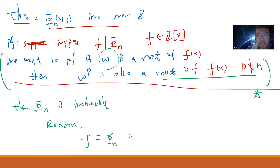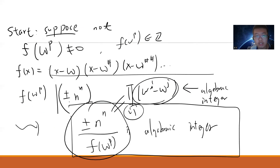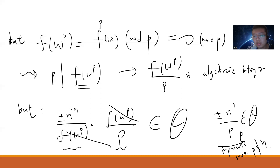So f(ω^p) must be zero. Since f(ω^p) = 0, you can keep applying this argument and prove that φₙ is irreducible. The proof uses algebraic integer theory in a very interesting way. See you guys in the next videos.